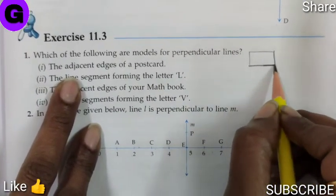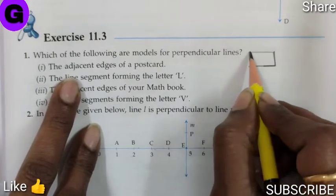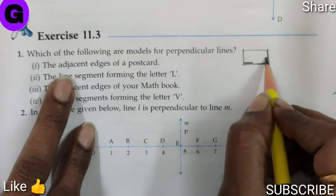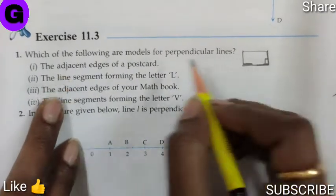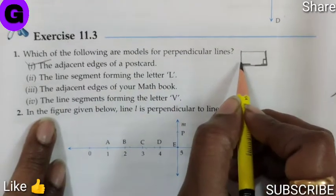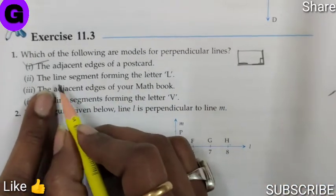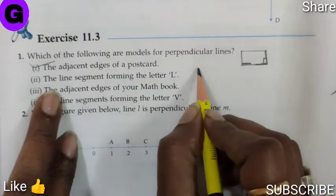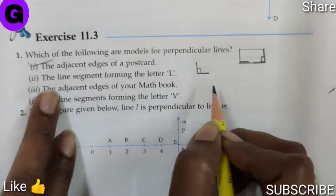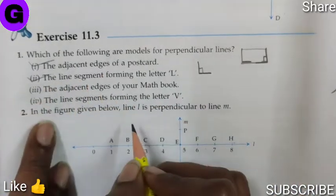These two are the adjacent side edges, here also. So no doubt it is 90 degrees. So yes, the adjacent side of a postcard is perpendicular line. Number two, the line segment forming the letter L. Again, this is how we write L. So no doubt it is a perpendicular line. This is also true.